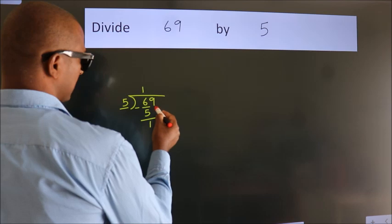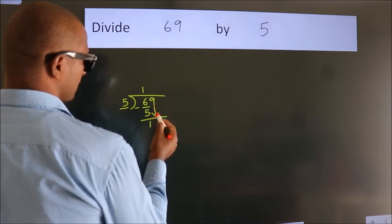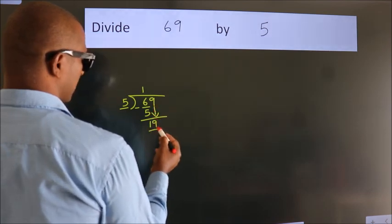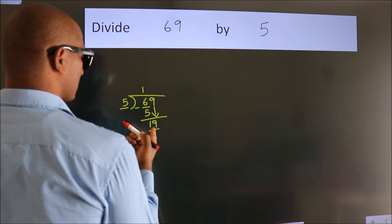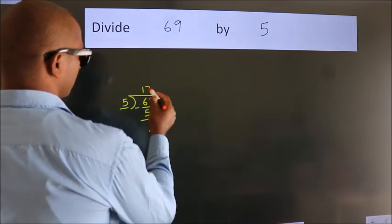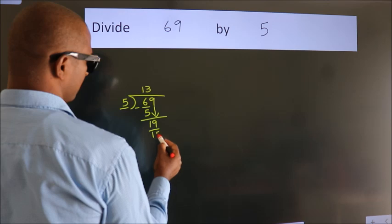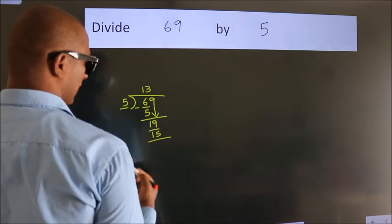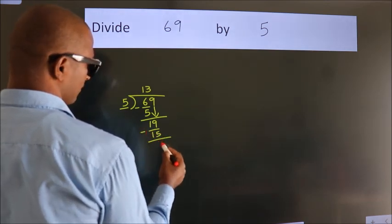After this, bring down the beside number. So, 9 down. So, 19. A number close to 19 in the 5 table is 5 threes, 15. Now we should subtract. We get 4.